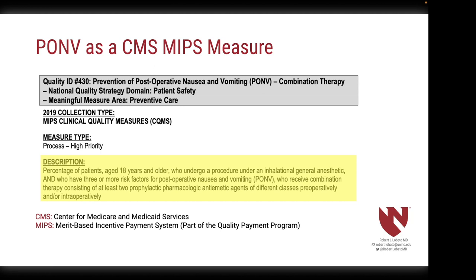PONV has become such an important patient-centered outcome that CMS has designated it a MIPS measure — number 430, called the Prevention of Postoperative Nausea and Vomiting Combination Therapy. For those outside the United States, CMS is the Center for Medicare and Medicaid Services, our primary government payer, responsible for about 20% of U.S. health care expenditures. MIPS is CMS's merit-based incentive payment system — a financial reward for institutions that perform well on specific quality improvement measures.